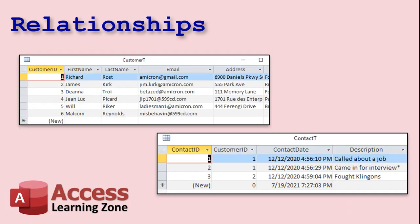Here's another example. In my TechHelp database I have customers and contacts — a contact being every time you talk to somebody. You can see customer ID number one (that's me), and in the contacts table there's a foreign key for customer ID. Contact one and contact two — called about a job, came in for an interview. The next contact is customer ID two, James Kirk, who fought Klingons.